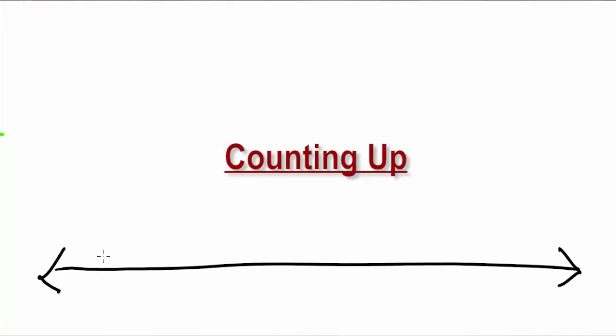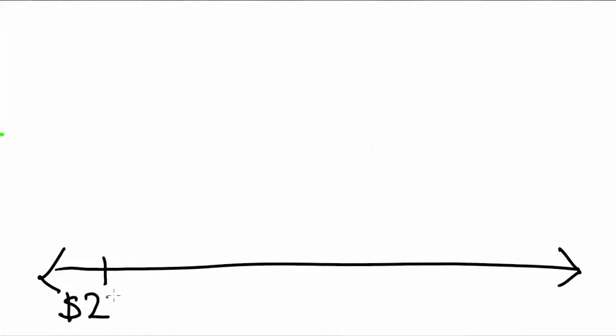An open number line is a very useful strategy and easy to use with a counting up strategy. It allows us to be flexible with our numbers, too. I started by drawing my line with arrows and making my starting point with a hash mark labeled $234 to represent where Joseph is with his money. And then down the line, I can mark the total of $300. The distance between the two numbers will tell us how much more money Joseph needs.